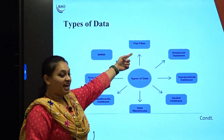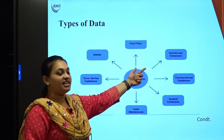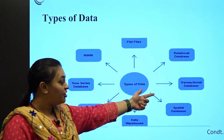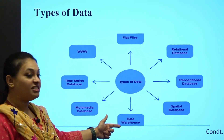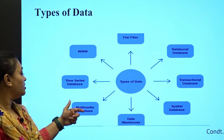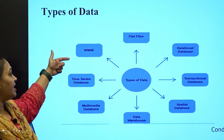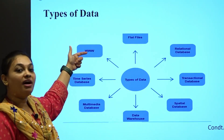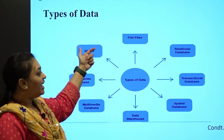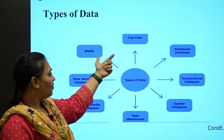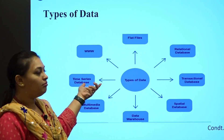The types of data we have are: flat files, relational database, transactional database, spatial database, data warehouse, multimedia database, time series database, and the world wide web. Probably three or four of these you might have already known.